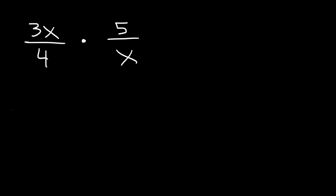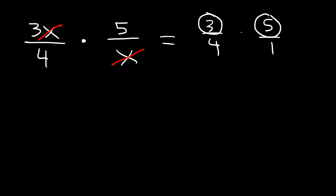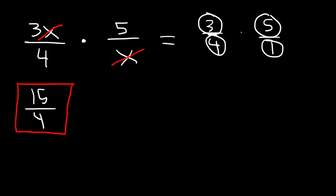The first thing you can do is cancel an x variable on the numerator of the first fraction with the x variable of the denominator of the second fraction. x divided by x is 1. So now we're left with 3 over 4 times 5 over 1. When multiplying two fractions, you can multiply across — multiply 3 and 5, which is 15, and 4 and 1, which is 4. So the answer is 15 divided by 4.